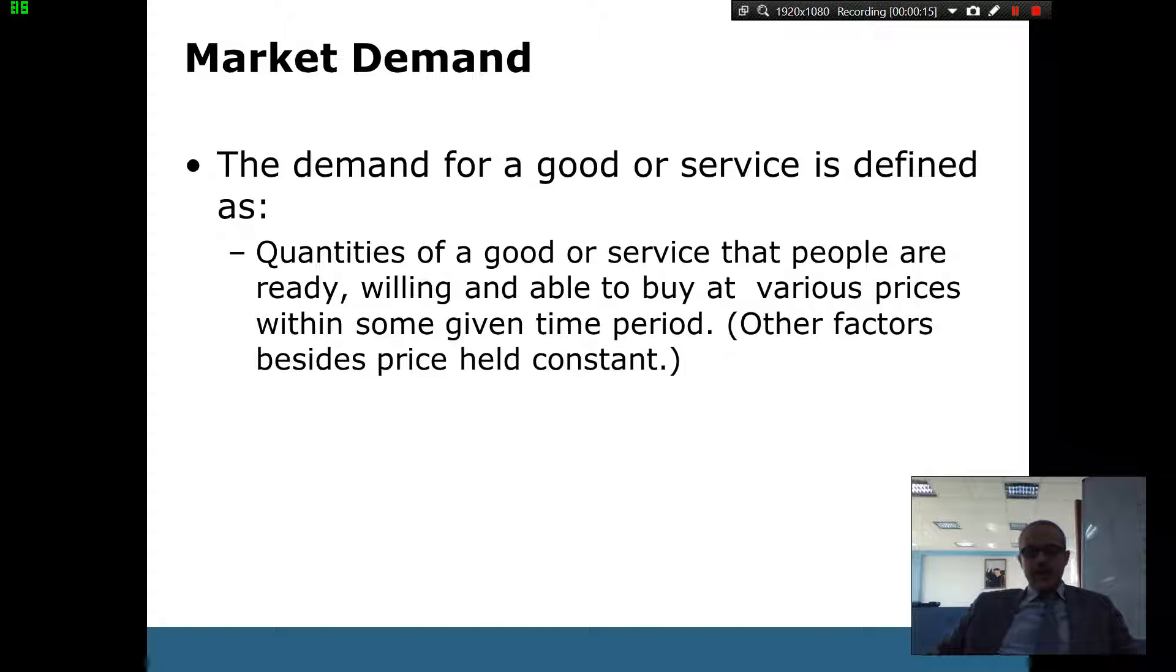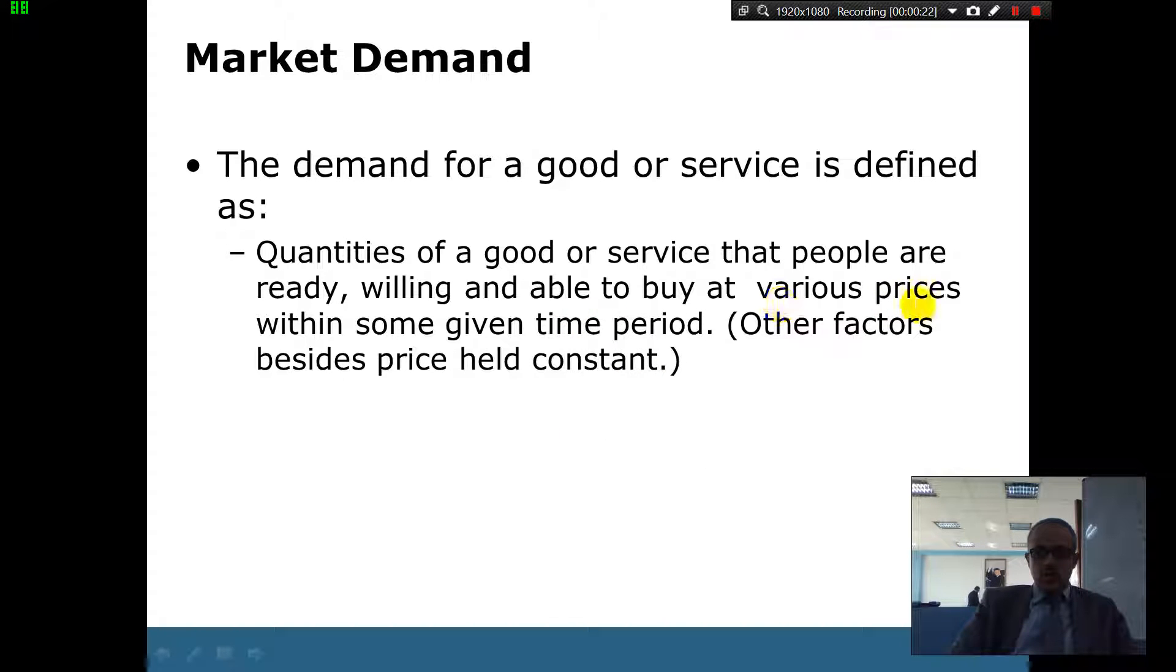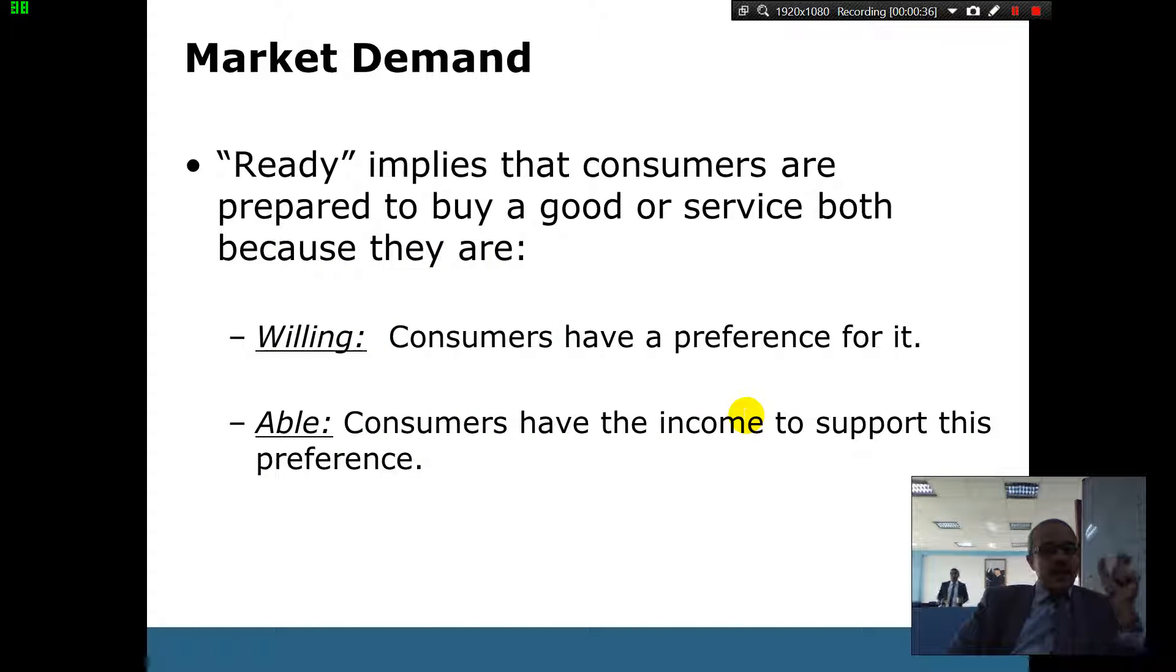We said demand, the key words on this slide is what? What are the key words? If you see the key words we've got here, demand is the quantity of goods that people are ready and willing and able to buy. So the idea of you're willing and able to buy, so that becomes a demand. Ready implies that the consumer is prepared to buy a good or service, both because they are willing and able. So if you're not willing, you're not part of the demand, and if you're not able to buy, then you're not part of the demand.